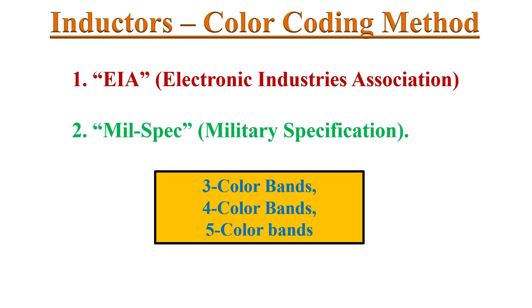Now the second type of coding scheme is the color coding method. There are two types of inductor color codes: EIA standard and MIL-S specification color coding.